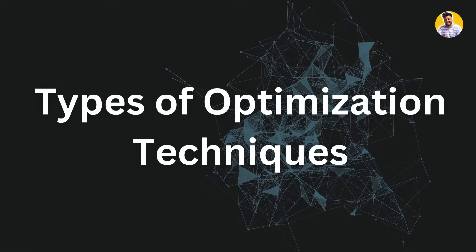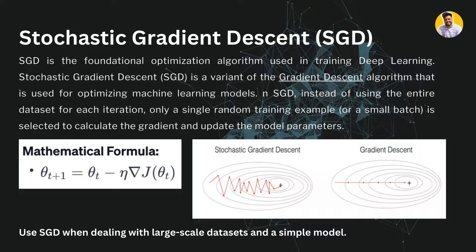There are multiple kinds of optimization techniques. The first is stochastic gradient descent (SGD). SGD is a foundational optimization algorithm used in training deep neural networks — it is a variant of gradient descent. In standard gradient descent we use the entire dataset for each iteration, but in SGD it takes a single random training example or a small batch and then calculates the gradient and updates the model parameters.